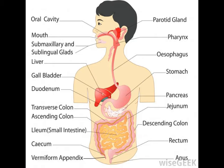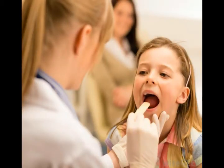The throat, called the pharynx, is divided into three sections: the nasopharynx at the top, the posterior pharynx in the middle, and the laryngopharynx at the bottom. The nasopharynx sits above the oral pharynx behind the nasal passages. It extends from the bottom of the skull to the soft palate, which is the soft tissue found at the rear portion of the mouth's roof where the uvula is located. The end of the nasopharynx marks the beginning of the posterior pharynx.